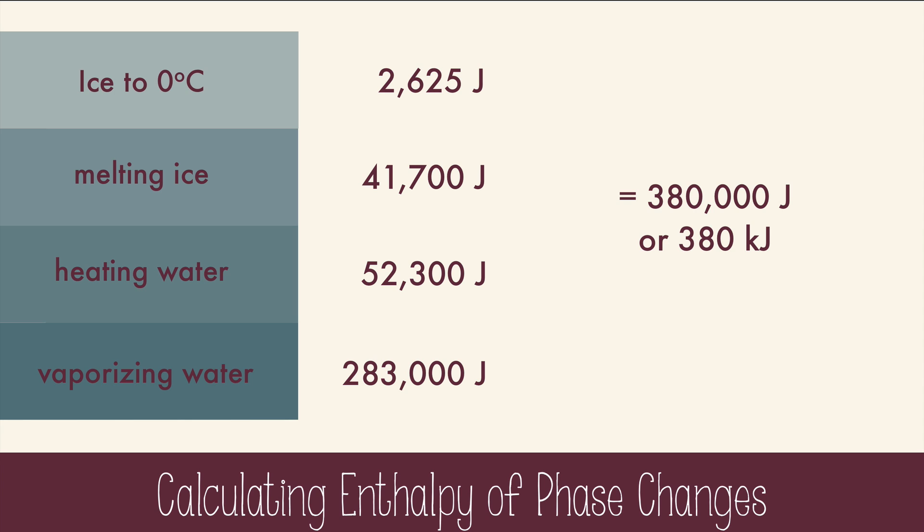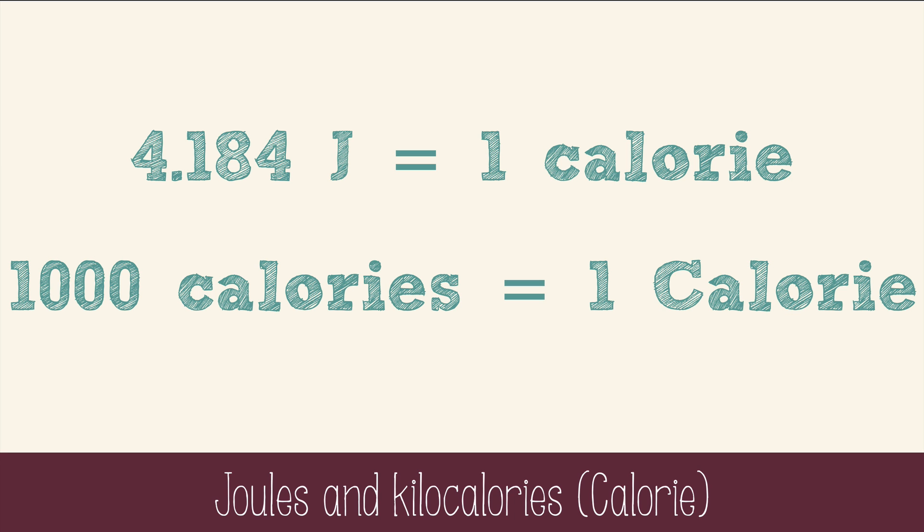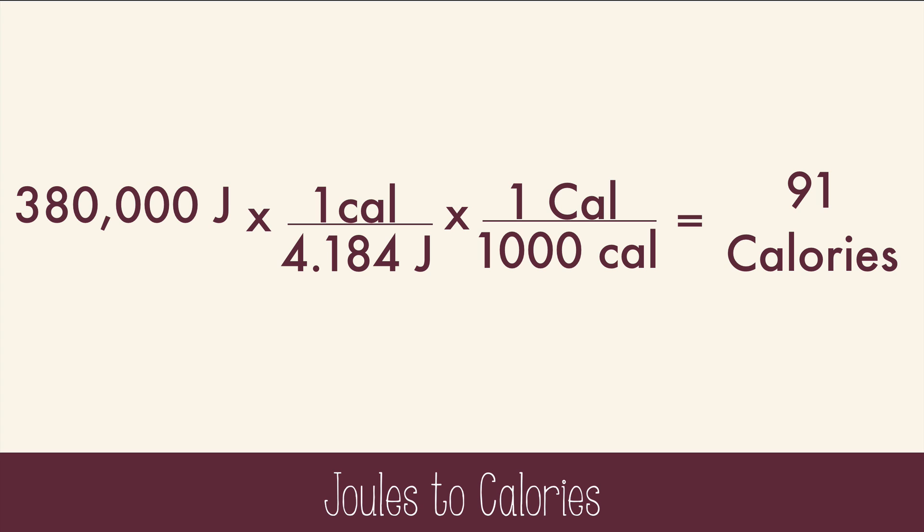But what does a number like this even mean? Let's put it in terms of something we're more familiar with. Let's talk about calories. There are 4.184 joules for every 1 calorie. Is that number familiar? It should be. It's the specific heat of water, which makes it nice and easy to remember. But calories, with a lowercase c, aren't the calories that you see on the back of a food carton. Those are kilocalories, or calories with a capital C. So let's use some dimensional analysis to see how many kilocalories it would take to turn 125 grams of ice into vapor. We start with 380,000 joules, and we'll convert from joules to calories. And then we'll convert from little calories to big calories, which are kilocalories. And we get 91 calories. That's like a quarter cup of guacamole. Mmm, guacamole.